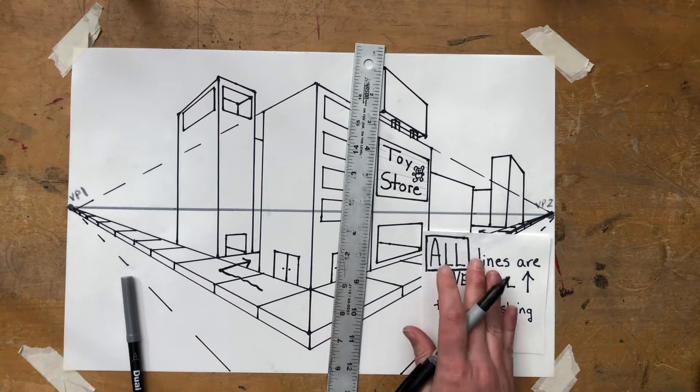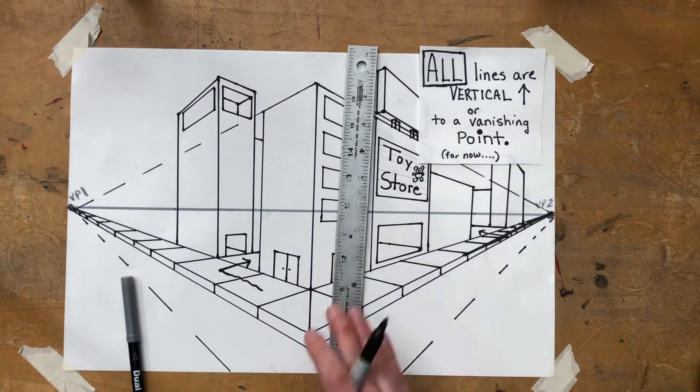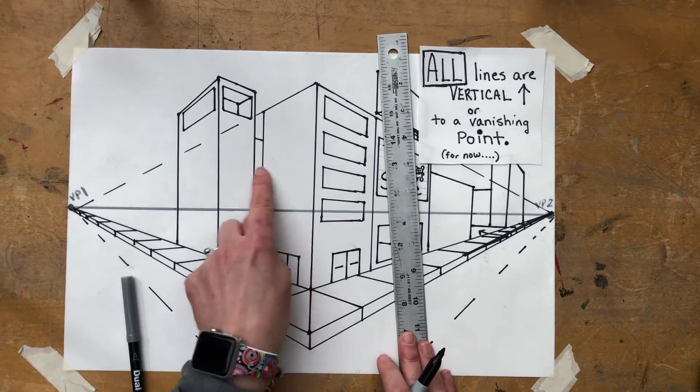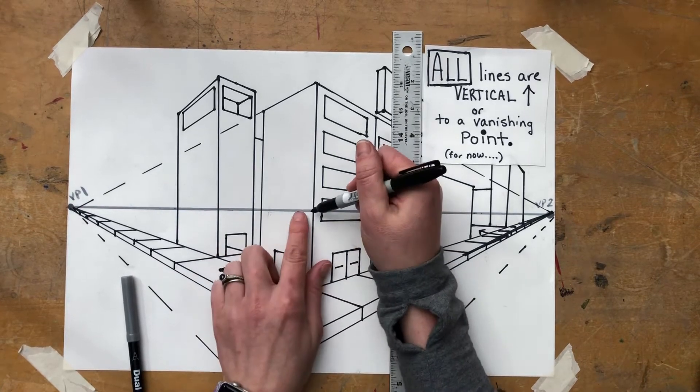And again, all lines are vertical or to a vanishing point still. All right, we haven't cheated. What if I wanted to connect these two buildings over the alleyway so you can walk in between them? Here's my first recommendation.